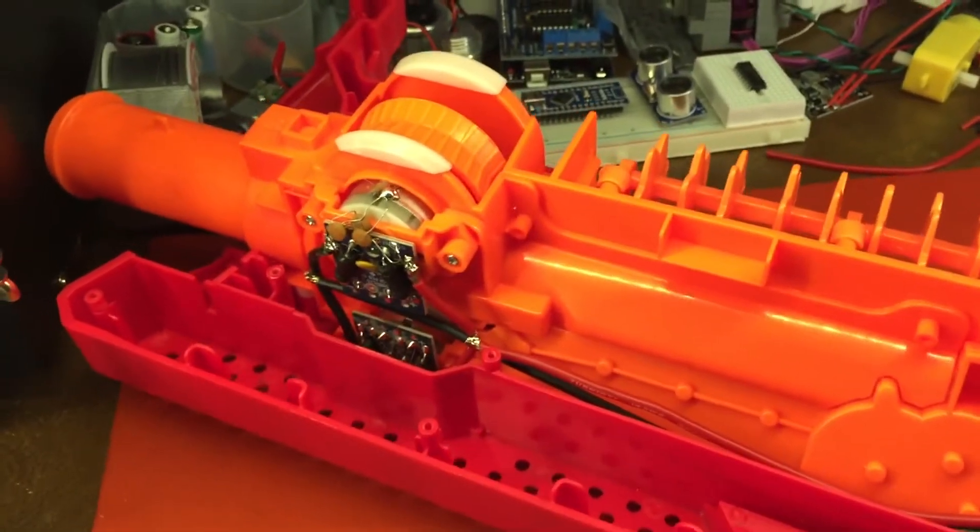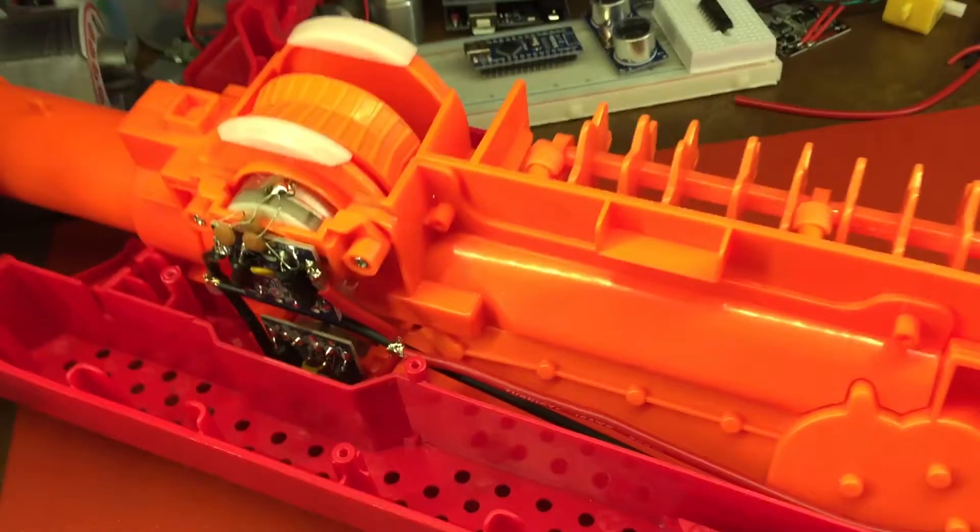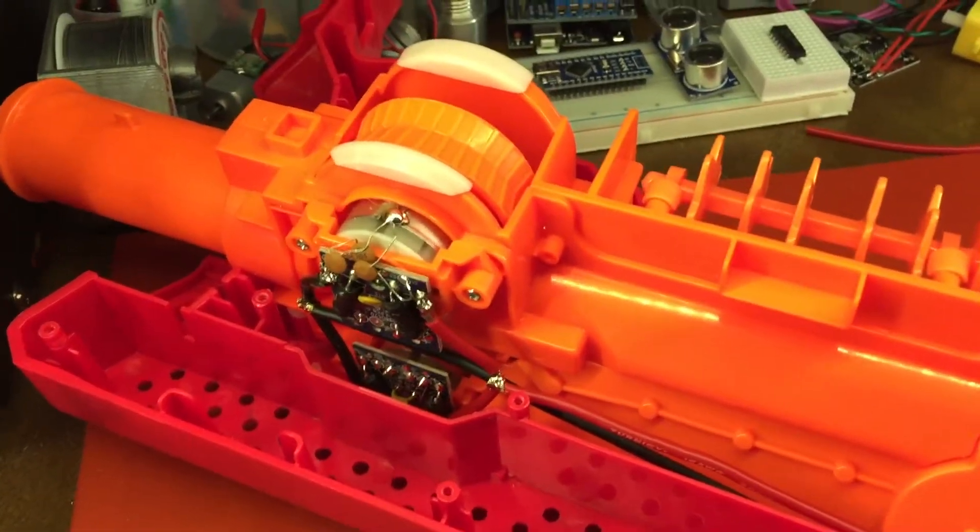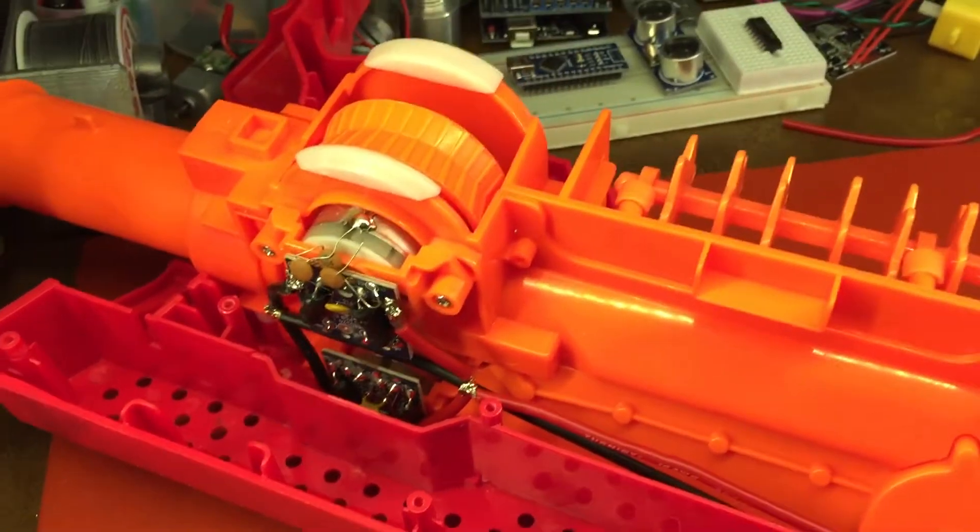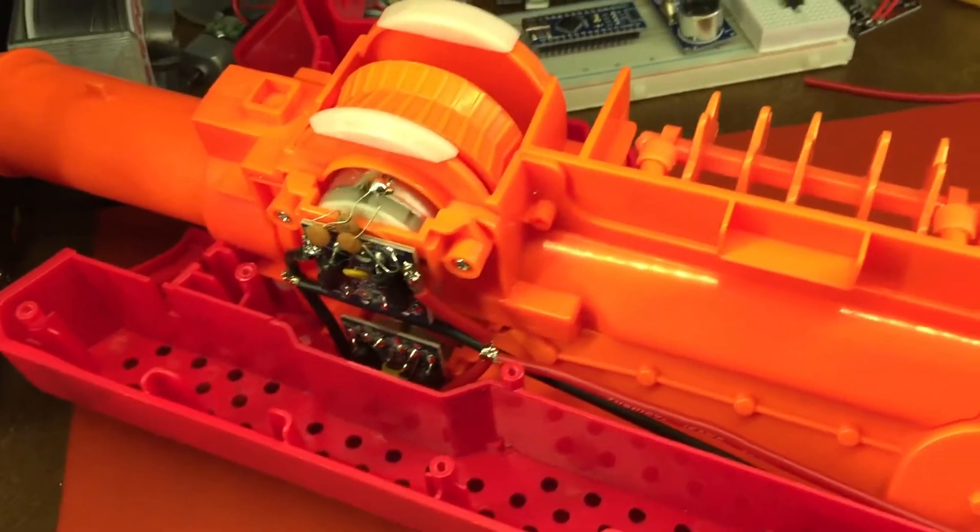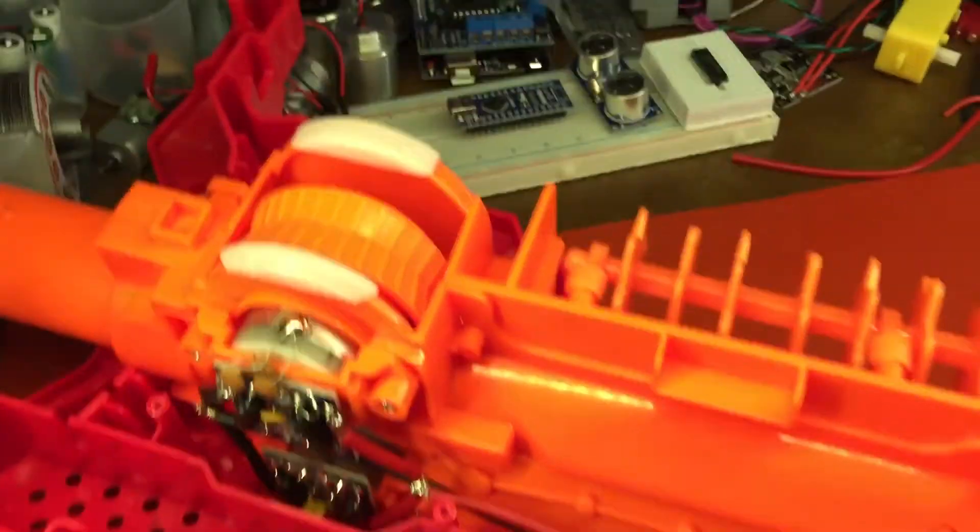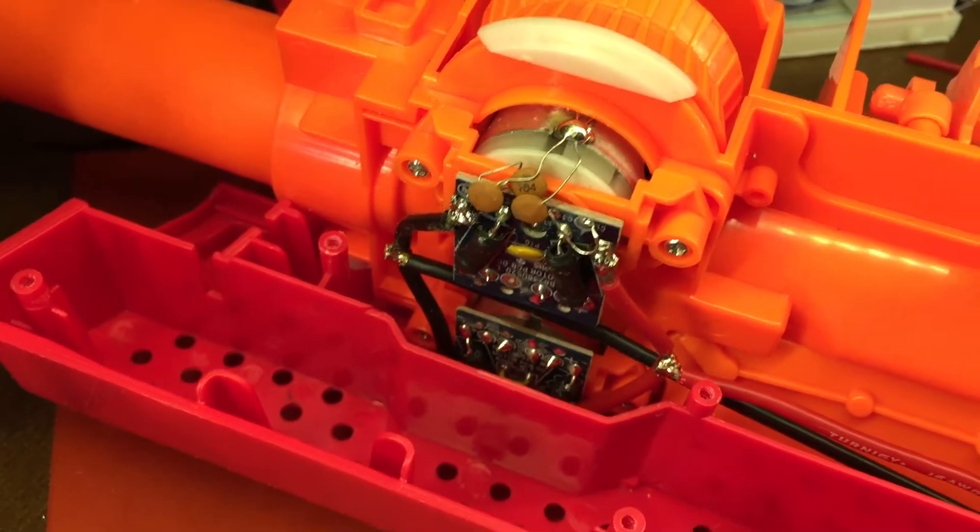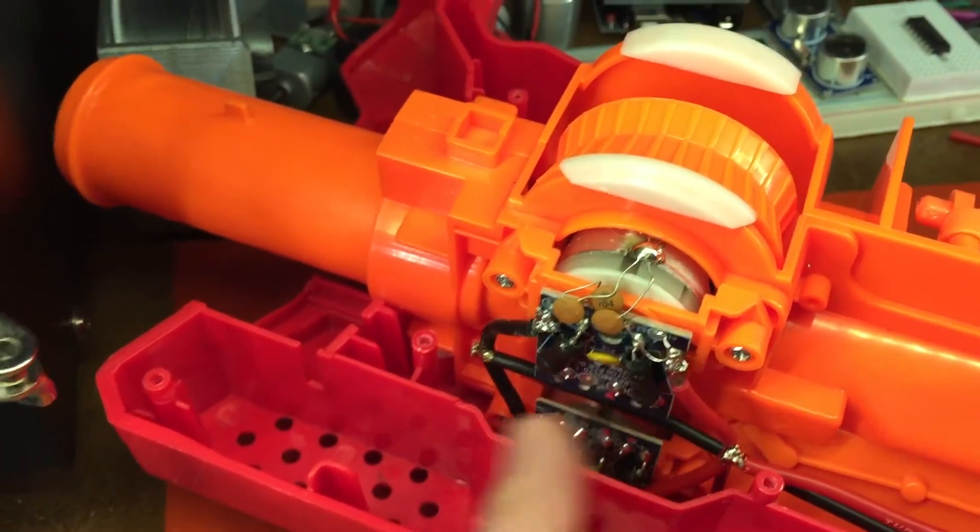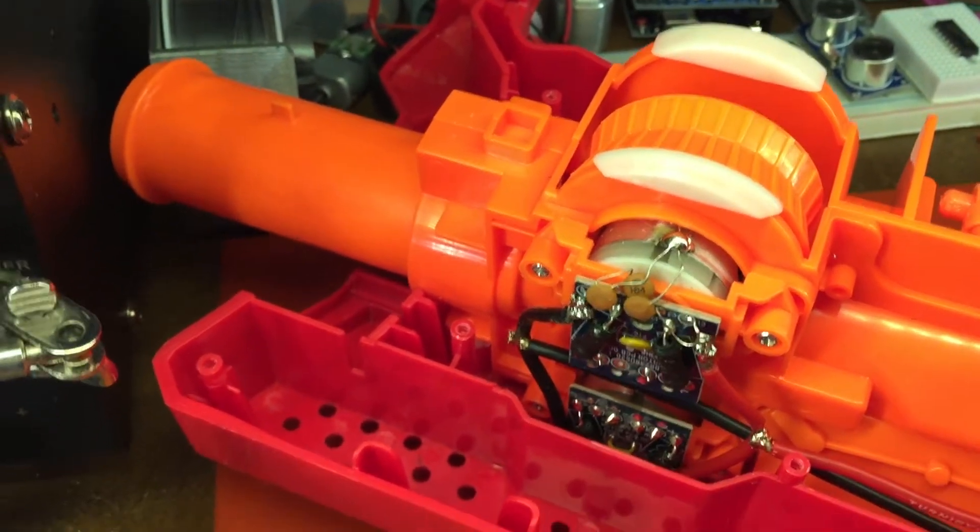This is the revised circuit for the Nemesis, although this will also work for pretty much any flywheel blaster that's an automatic. This would be really good for the Chaos as well. Starting at the very beginning, we have the negative poles here.